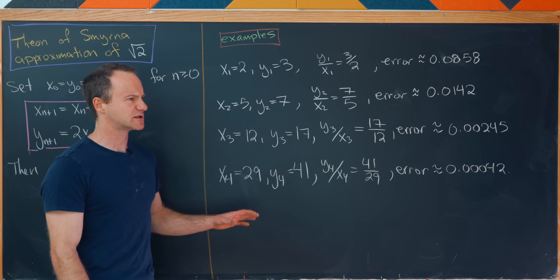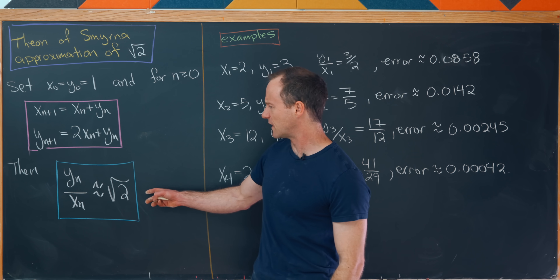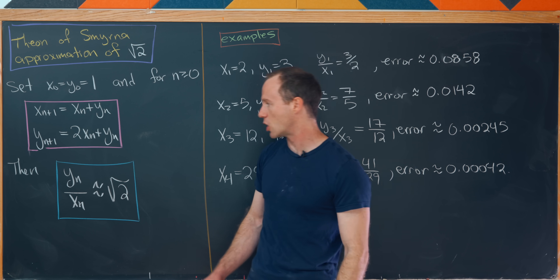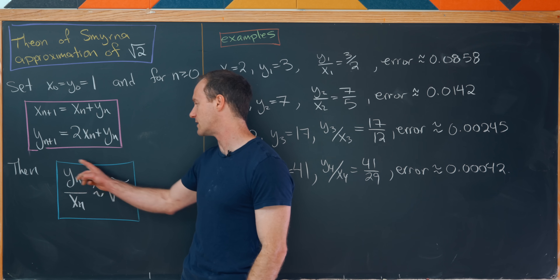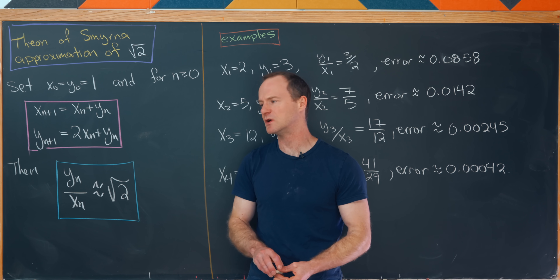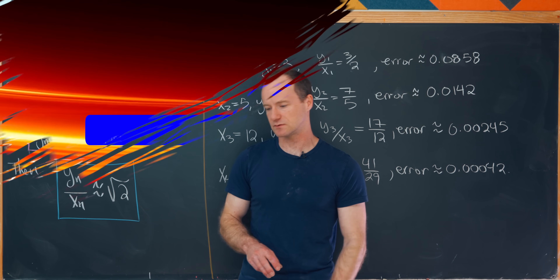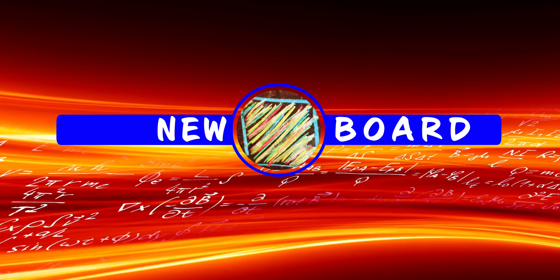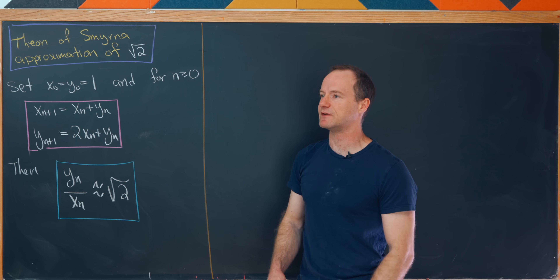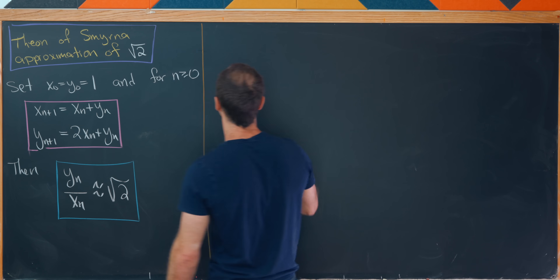Now what I'd like to do is prove that this is indeed a good approximation by showing that the limit of this quotient is the square root of 2 using modern methods. When I said modern methods, I could have meant a lot of different things, but we're going to start off with some linear algebra.